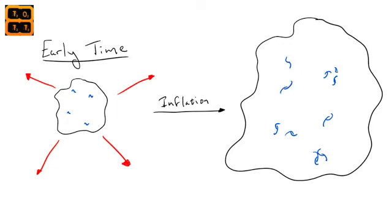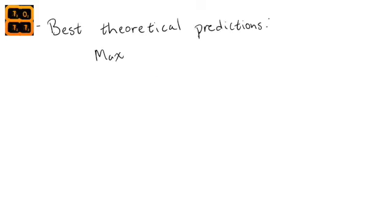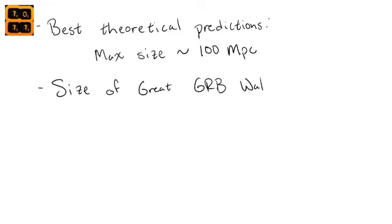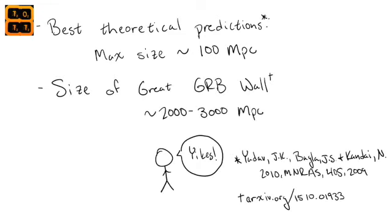However, if the cosmological principle is correct, these fluctuations, and thus the corresponding large-scale structures, shouldn't be too large. The Great GRB Wall is about 10 times the most well-accepted theoretical predictions, and so it seems to contradict the cosmological principle.